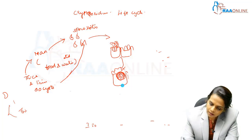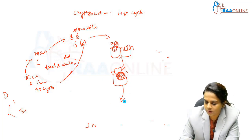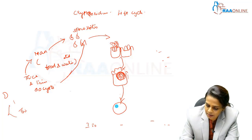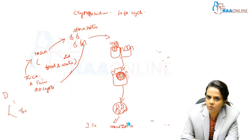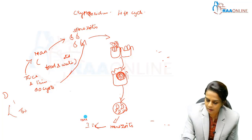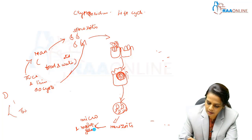Then schizogony occurs, transforming the sporozoites into schizonts which release merozoids. These merozoids then undergo gametogony to form micro and macrogametes — this is the sexual cycle.